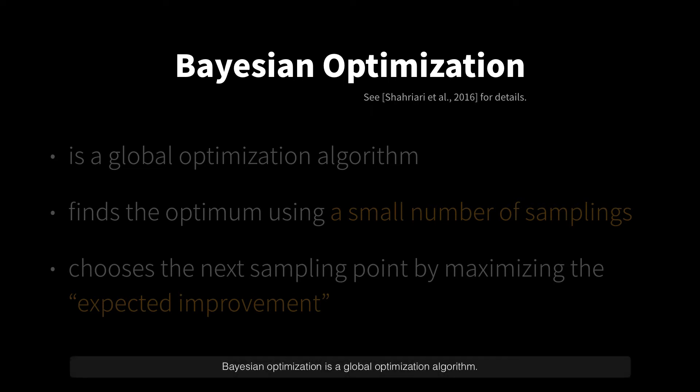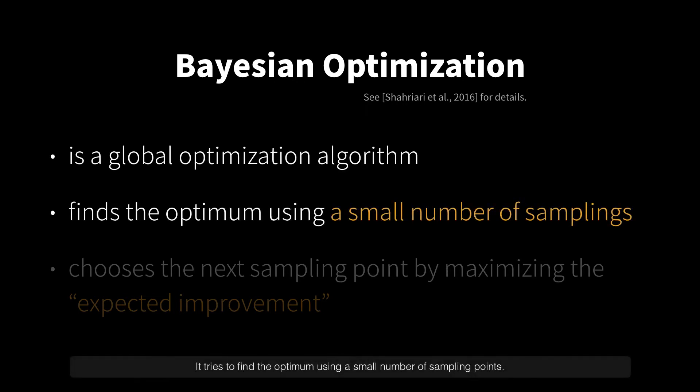Bayesian optimization is a global optimization algorithm. It tries to find the optimum using a small number of sampling points.